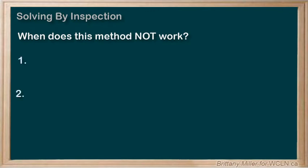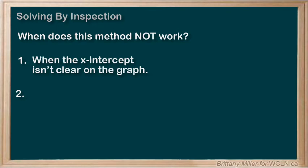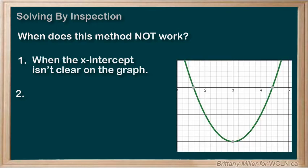I've got two for you right here. The first one is when the x-intercept isn't clear on the graph. Consider y = (x-3)² - 2.